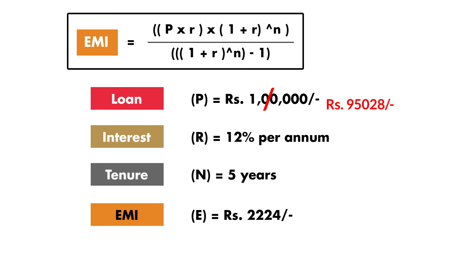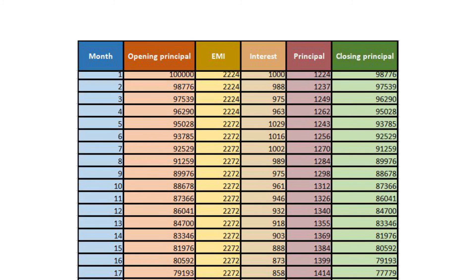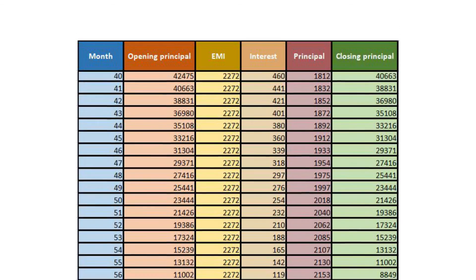Out of a total tenor of 60 months, 4 months have already passed. Therefore, the new tenor or small n would be 56 months. Interest rate has changed from 12% per annum to 13% per annum. Therefore, the monthly interest or small r would be 1.0183%, which is equal to a value of 0.0183. If we substitute these values into the formula, the new EMI will be equal to Rs. 2,272. Since this EMI has been adjusted to reflect the revised interest rate, there will be no outstanding amount remaining at the end of the tenor.